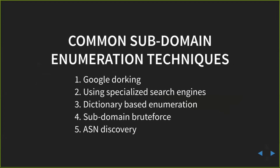People usually find subdomains using Google dorking with special search operators — Google, Bing — and specialized search engines like VirusTotal. There's also dictionary-based enumeration: if you know the organization well, create a list of possible subdomains and try to resolve everything — a bit better than brute force. Subdomain brute force is highly inefficient; with 1,000 or 2,000 years on your hands, you could find everything. There's also ASN discovery, a very effective technique. These are common methods.